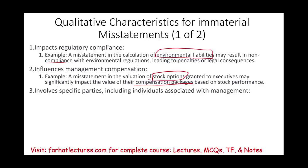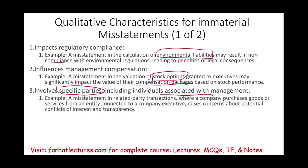What if the misstatement involves specific parties — specifically, parties associated with management, what we call related party transactions? If we're buying from related party transactions or they are giving us services — for example, companies related to the company's executives, such as husband, wife, children, nephews, nieces, boyfriend, girlfriend — this is going to raise concern about the potential conflict of interest and transparency. So we look at the misstatement not from a numerical perspective but from context.